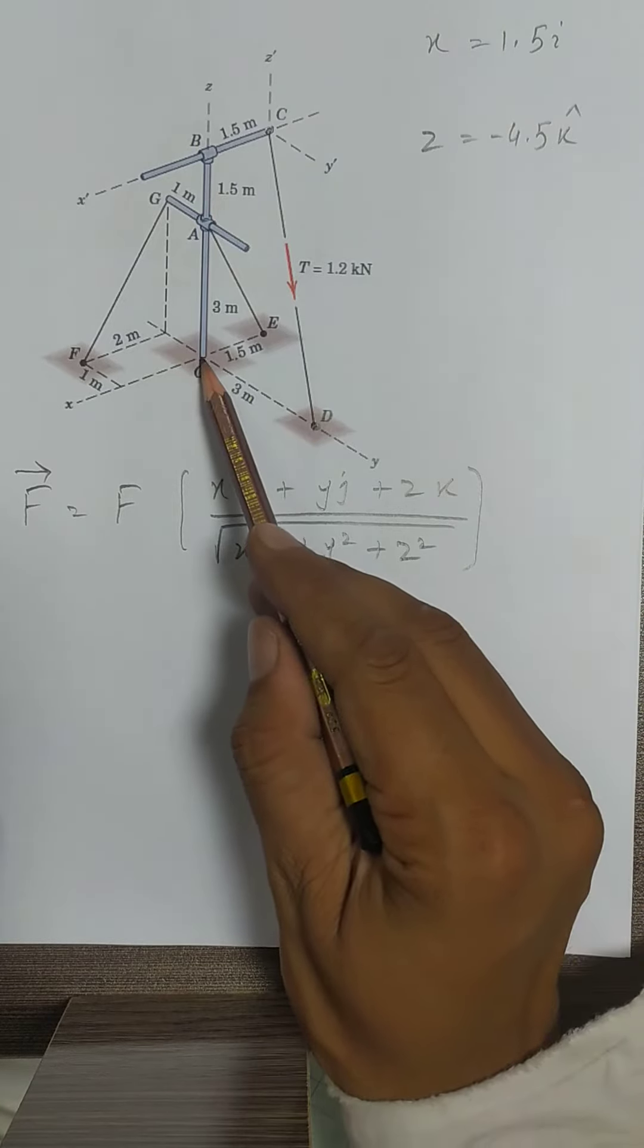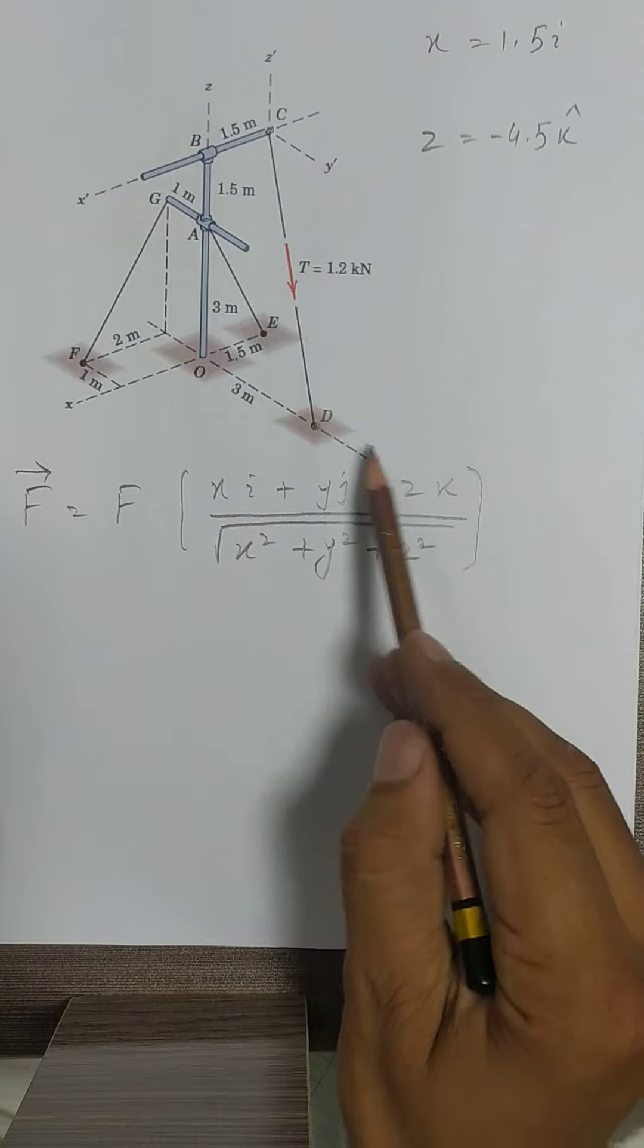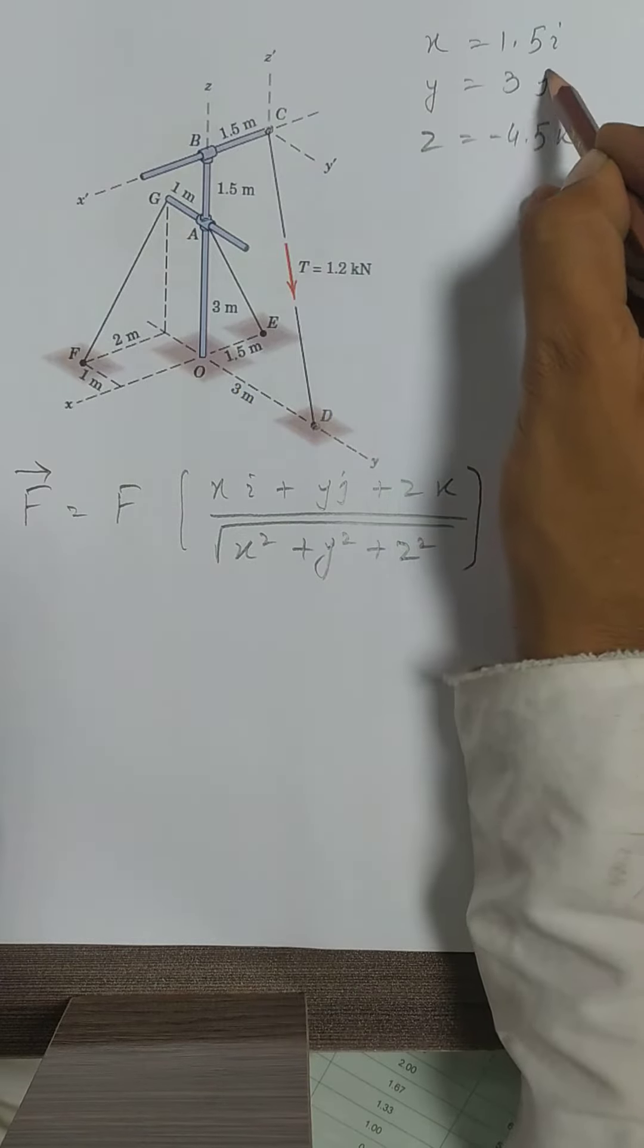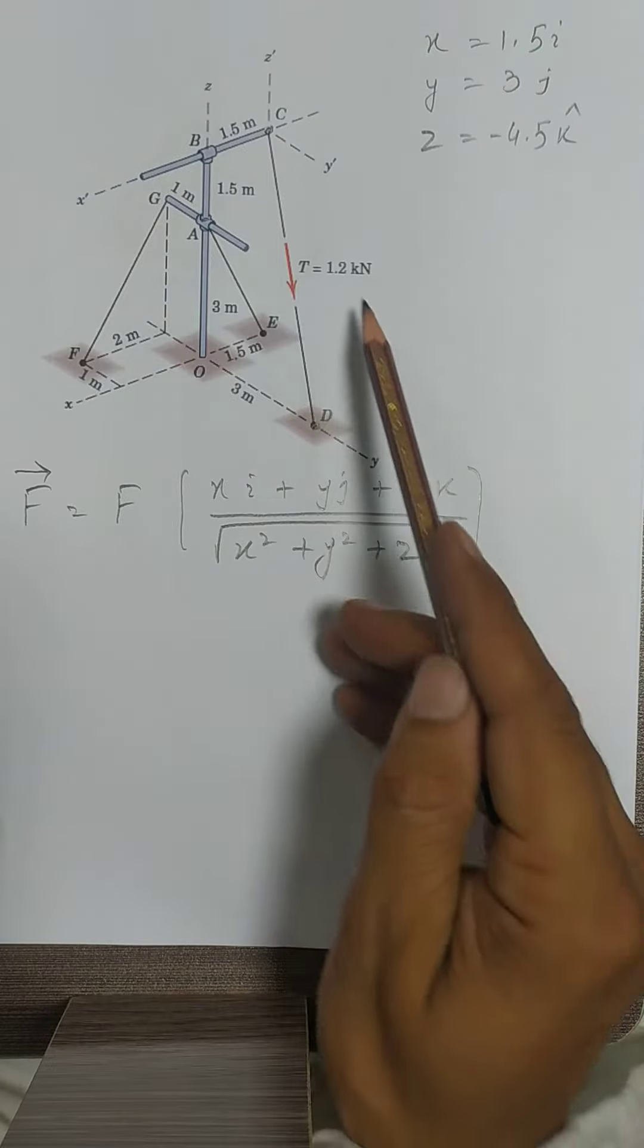So we will move in positive y direction. There is 3 j, so that will be 3 j. Now putting these values in this formula, and the value of force and the magnitude of force is 1200 newton. Let's put all these values in the formula.